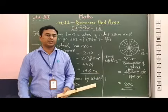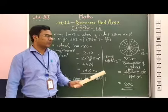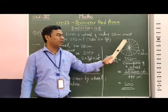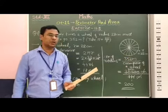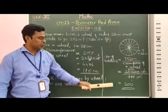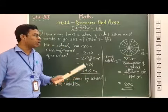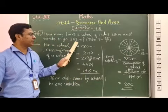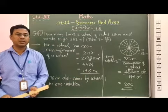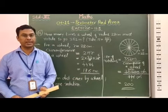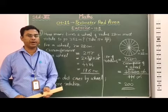Therefore, students, a wheel of radius 28 centimeters must rotate 200 times to go 352 meters. I hope it is clear to you. Thank you and have a nice day.